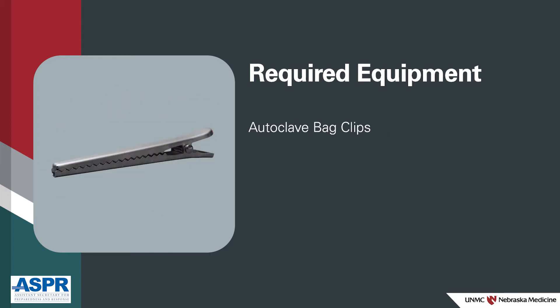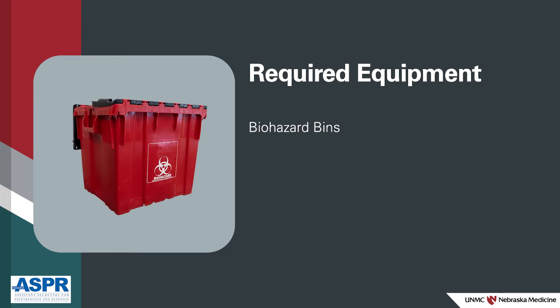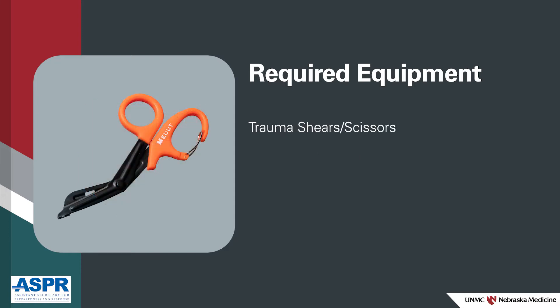Additional equipment needed includes: a pack of autoclave bags; clips for autoclave bags; biohazard bins — line each bin with a biohazard bag for transport to autoclaving; alternatively, category A boxes lined with a biohazard bag; and trauma shears or scissors.